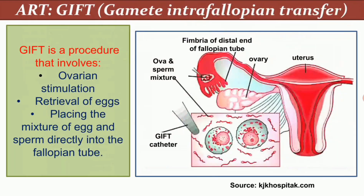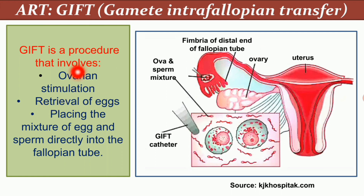The second ART method is GIFT — gamete intrafallopian transfer — where gametes are transferred to the fallopian tube. GIFT involves ovarian stimulation, retrieval of eggs, and placing the mixture of egg and sperm directly into the fallopian tube. Eggs are collected after ovarian stimulation, sperm is collected, and the ovum-sperm mixture is transferred directly into the fallopian tube.